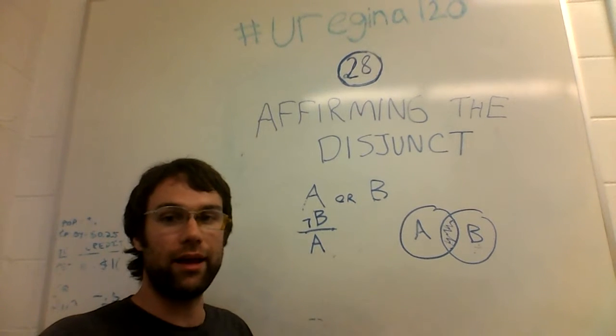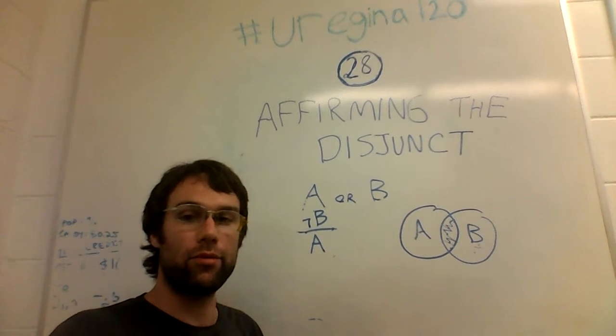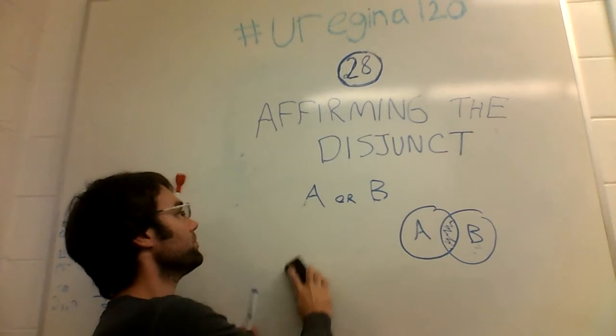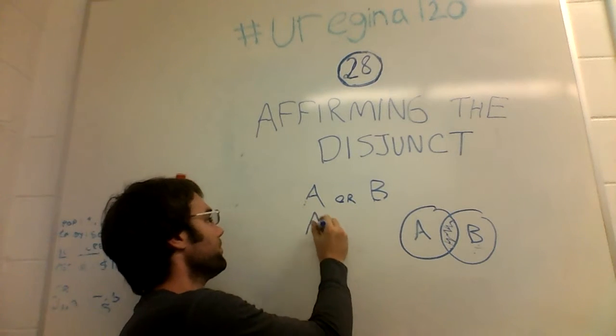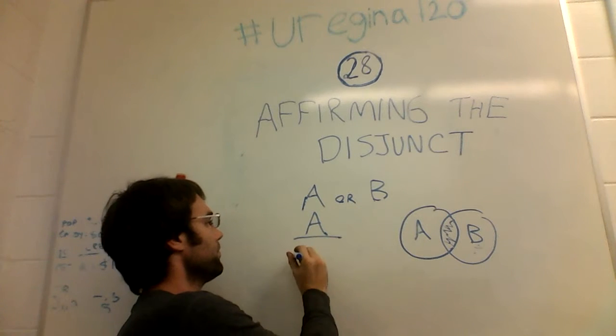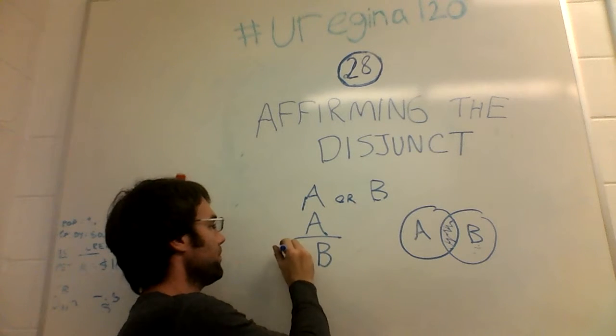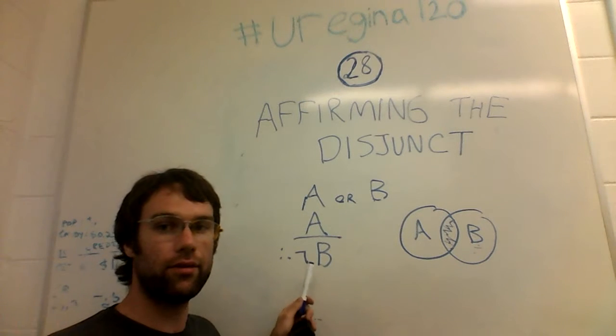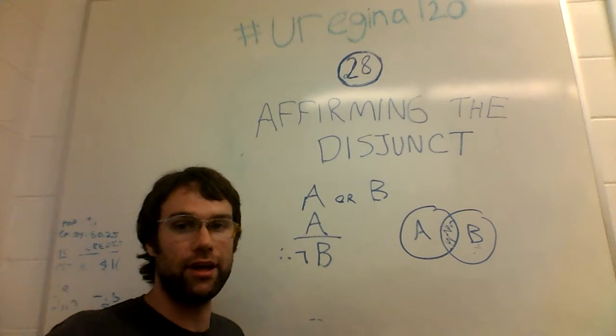So those are the two ways of making a valid argument that's related to this one. But going back to the original: A or B, A, not B, of course is the original invalid form.